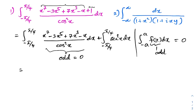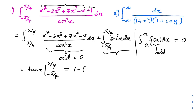So we have the integral from -5/4 to 5/4 of secant squared of x dx. Integrating secant squared gives tan(x), evaluated from -5/4 to 5/4. That is tan(5/4) minus tan(-5/4), which equals tan(5/4) minus negative tan(5/4), giving us 2. So the answer to the first integral is 2.